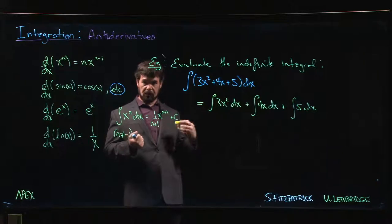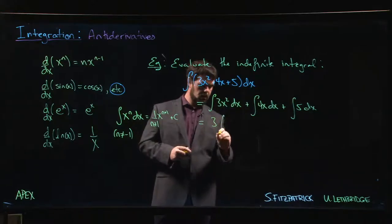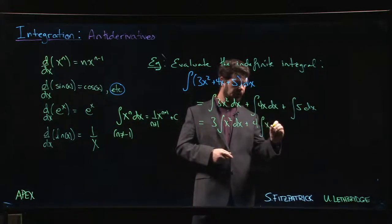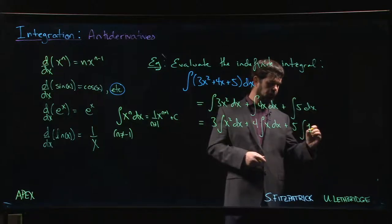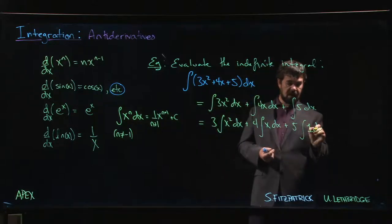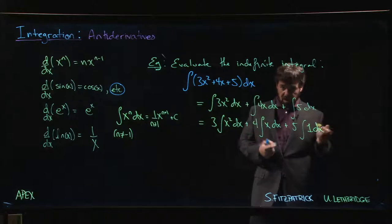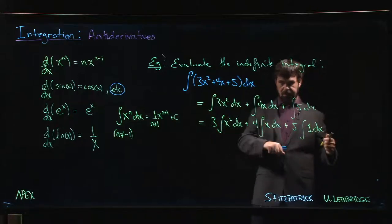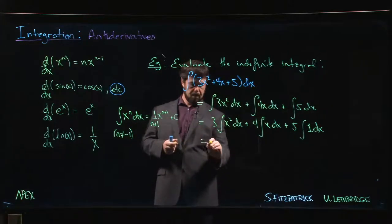Now, if you wanted to go one step further, we have a constant multiple rule for derivatives. We can even do this. We could say, this is three times the anti-derivative of X squared, plus four times the anti-derivative of X plus five times the indefinite integral of one. And remember that you can think of this anti-derivative as something which cancels the differential. So if there's nothing getting in the way, if there's no function in the way, anti-derivative cancels with the D, leaves you with the X. Or you can just think of remembering that the derivative of X is one, so the anti-derivative of one must be X.